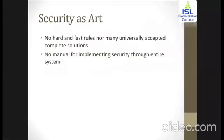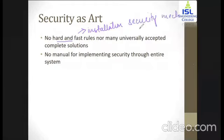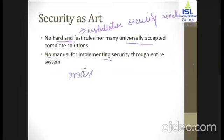Security as an art means it does not have any hard and fast rules — there are no hard and fast rules for installation of security mechanisms, and no rules that are universally accepted. Some rules apply only to specific areas or organizations. There is no manual for implementing security because information security is a process, not a goal. You implement security and then, based on usage, identify whether you need to upgrade it.